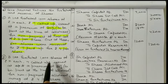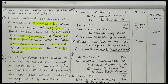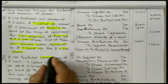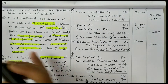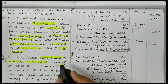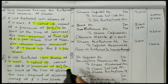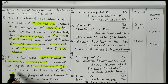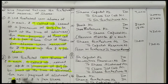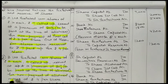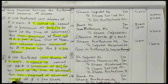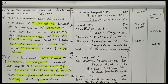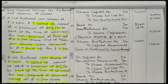Now this is the second example. B Limited forfeited 1000 shares of ₹10 each, ₹7 called up, issued at a premium of 20% to be paid at the time of allotment — same as above. The difference is: these shares are forfeited due to non-payment of allotment money of ₹4 per share including premium, and first call of ₹2 per share.